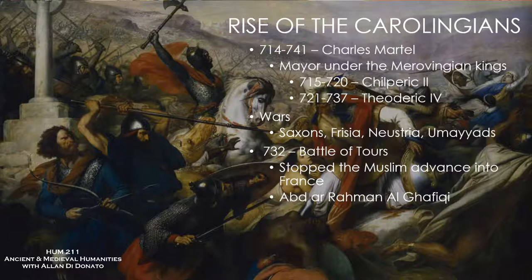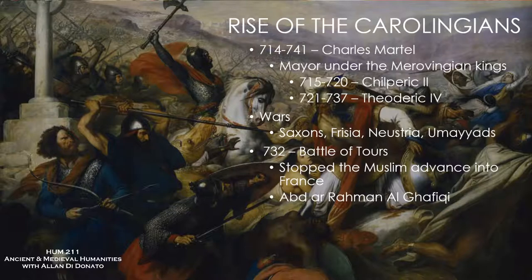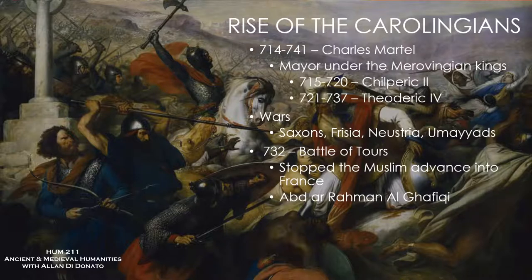But about a decade later, around 732, Duke Odo was defeated by Abd al-Rahman at Bordeaux. Odo — who was an enemy of Martel — went to Martel for aid, agreeing to submit to Martel in exchange for assistance against the Arabs. Martel agreed and moved his troops down to block the Arab armies as they came up into the Frankish territory.